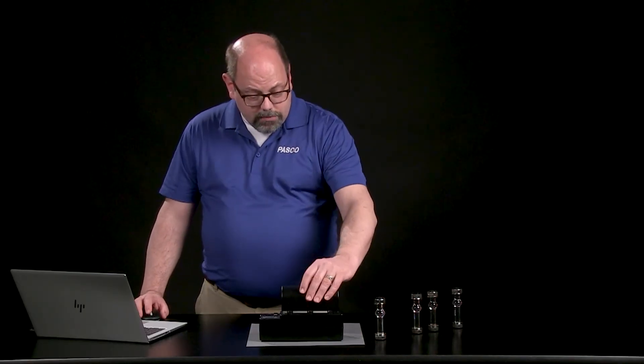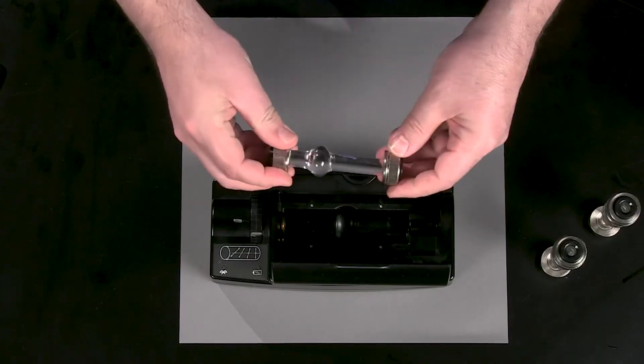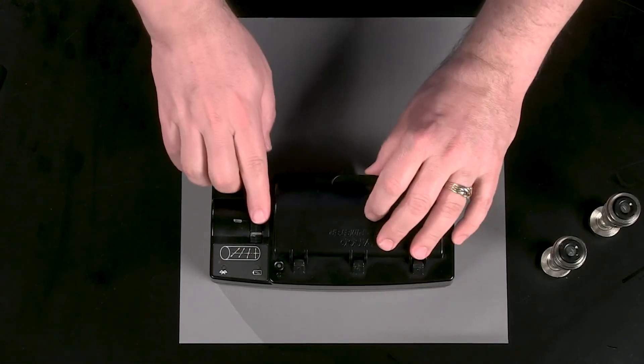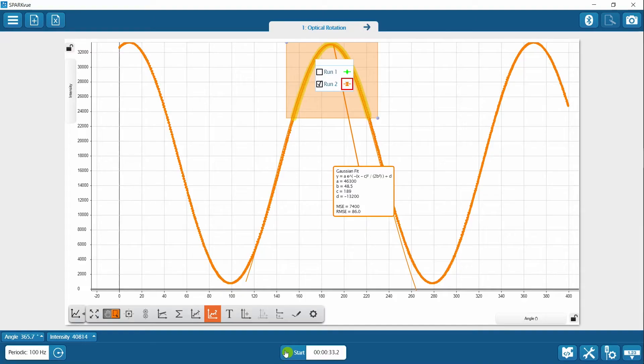Now we're going to put a new solution in, and that's going to be a 6% solution. I'll orient this the same way, put the label at the top, scoot the cell over to the right, make sure this is a little ahead of the starting reading, and let's make a second run.